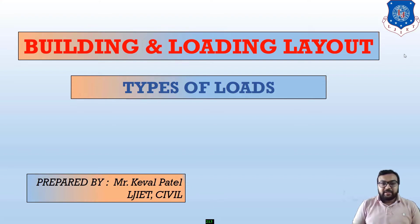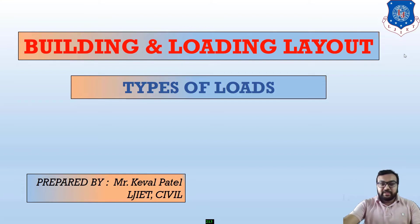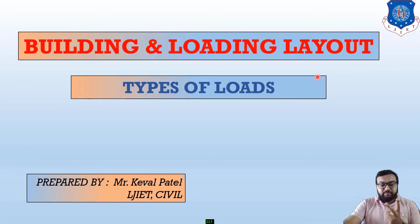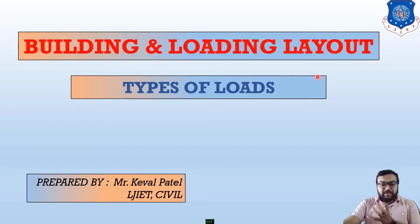Let us start our module number 1 in which chapter number 1, the name of chapter number 1 is Building and Loading Layout. In Building and Loading Layout, there are lots of theories but two main theories are important. The first theory is Type of Load, and the second theory is Load Combination.